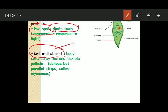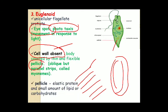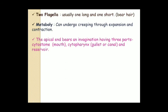Now their cell wall. The euglenoids completely lack the cell wall. Cell wall is completely absent. Instead, their body is covered by thin and flexible pellicle. This pellicle contains oblique but parallel strips which are called myonemes. It lacks cell wall but contains an outer covering known as pellicle with oblique parallel strips called myonemes. The pellicle is composed of an elastic protein and small amount of lipid or carbohydrates. Now their flagella. They possess two flagella, usually one is long and another one is short. These flagella bear small hair-like structures on their body surface.